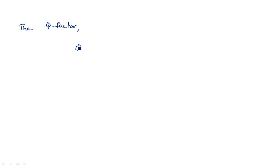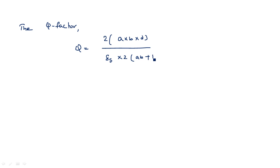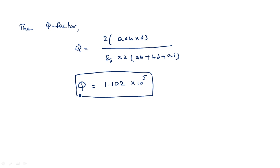For a rectangular cavity resonator, the quality factor Q = 2 × volume / (δ_s × surface area) = 2abd / [δ_s × 2(ab + bd + ad)]. After substituting all values, Q = 1.102 × 10⁵. A high Q factor like 10⁵ indicates very good energy storage inside the cavity resonator.